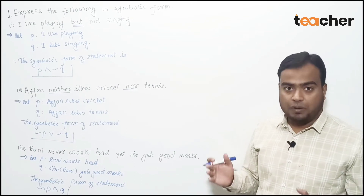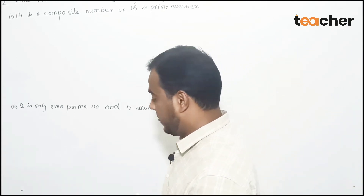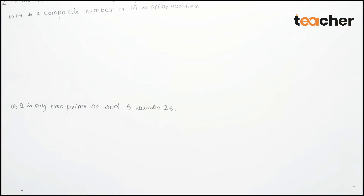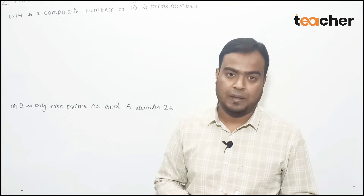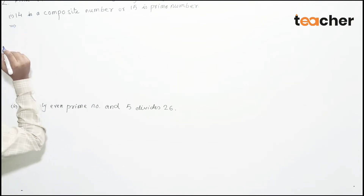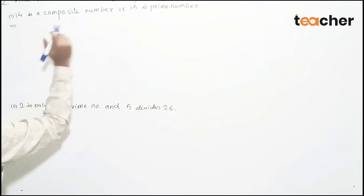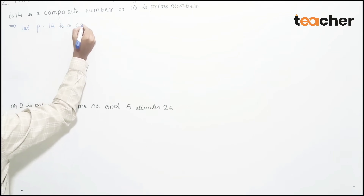Hope you all understood. Now we have to find the truth value of the following compound statements. The first example is: '14 is a composite number or 15 is a prime number.' First we write the symbolic form by breaking the compound statement into two simple statements. Let P represent '14 is a composite number.'